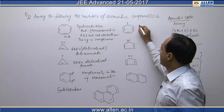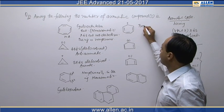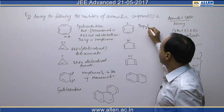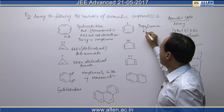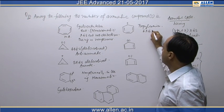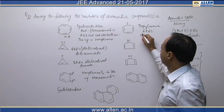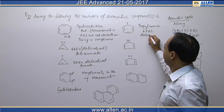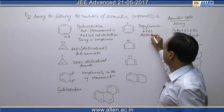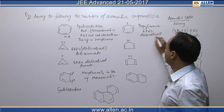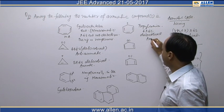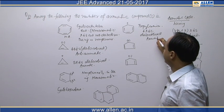This ion is called the tropylium ion. It has 6 pi electrons delocalized, so according to Hückel's rule it is an aromatic system.